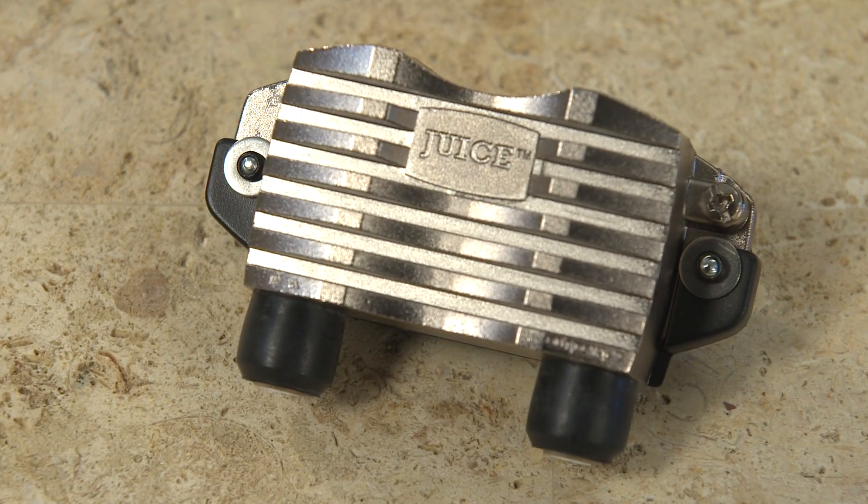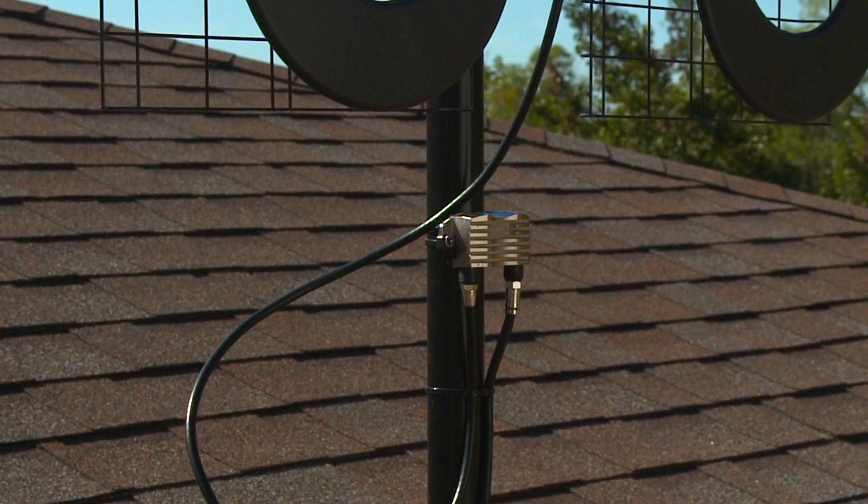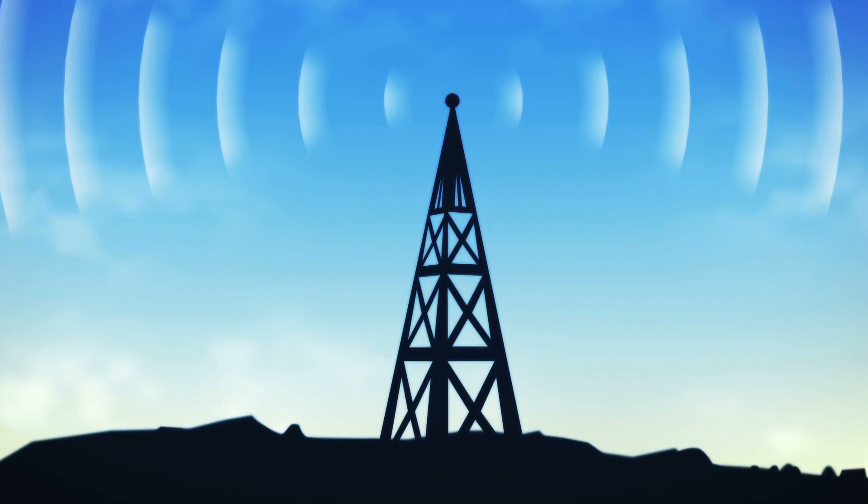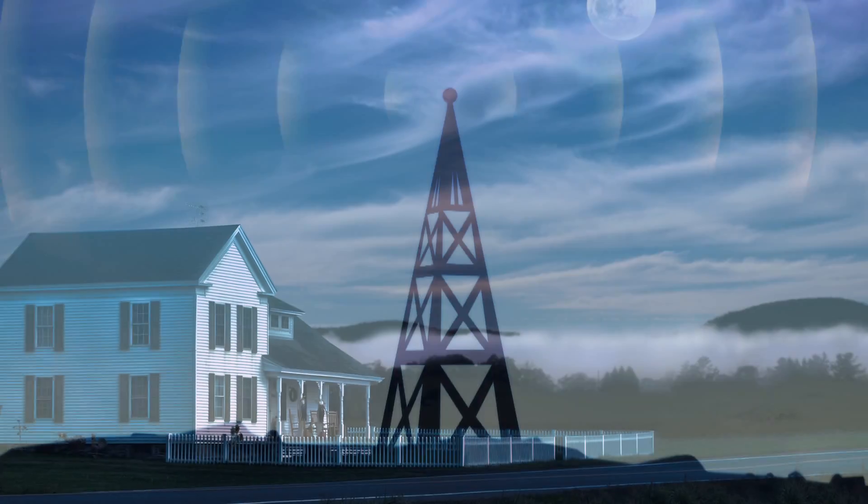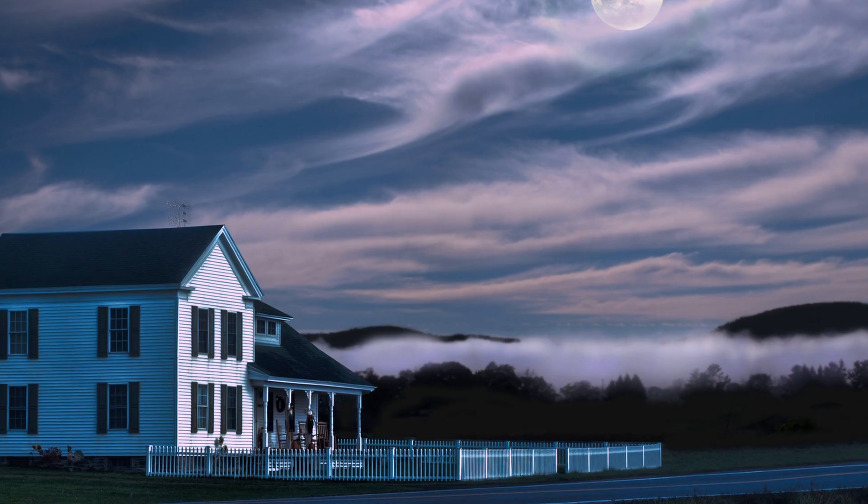The JUICE preamplifier system from Antennas Direct is the perfect complement to your antenna when you need to boost weak broadcast signals in urban, suburban, or rural areas.